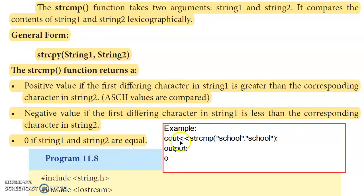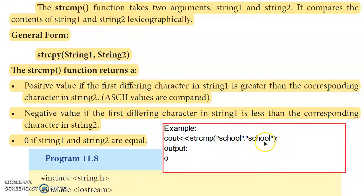In a simple example where both strings are equal — all characters in small or capital letters — the ASCII values match and the output is zero. This demonstrates the strcmp function with a simple equal-string example.